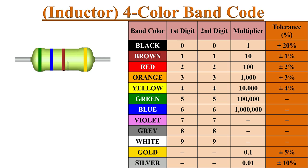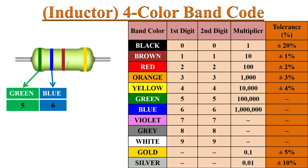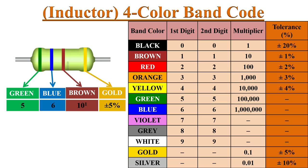Here green is 5, blue is 6, the multiplier is brown — that is 10 to the power of 1 — and the fourth band is gold, showing a tolerance of plus or minus 5%. Therefore the value of inductance is 560 micro-Henrys with plus or minus 5% tolerance.